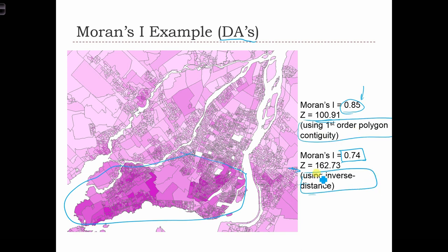Typically we won't see vast differences — we don't see huge changes in Moran's I — but the changes are big enough that we have to realize that the value of Moran's I we report is very much tightly related to our choice of W.